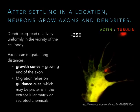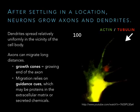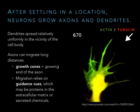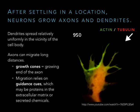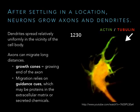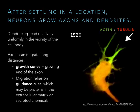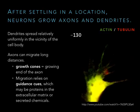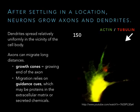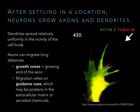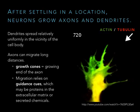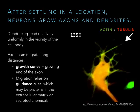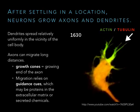Depending on which receptors a growth cone has, it will be attracted or repelled by different guidance cues, allowing axons to migrate substantial distances to innervate the entire body. The growth cone contains cytoskeletal filaments controlled by those receptors — stabilizing the cytoskeleton promotes growth in that direction, while destabilizing it causes retreat. In a demonstration, actin (green) is at the periphery and tubulin (red) is central. When a guidance cue is released, actin grows toward it and the growth cone turns in that direction.